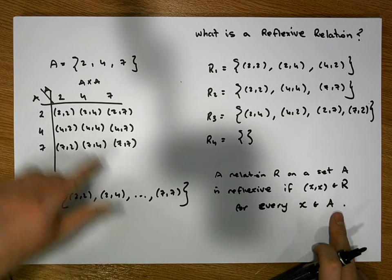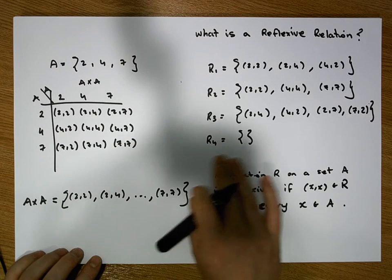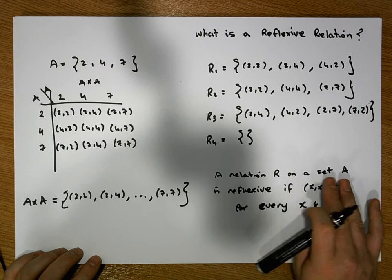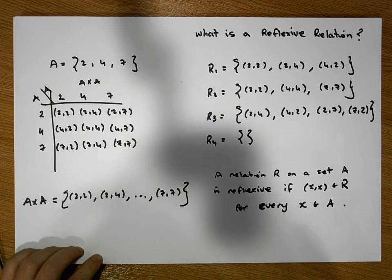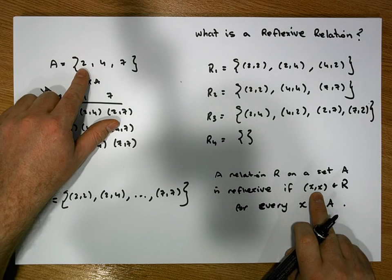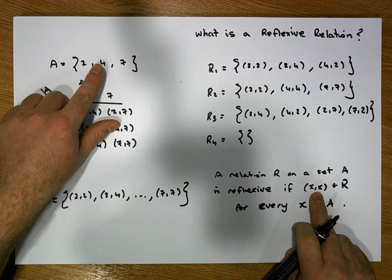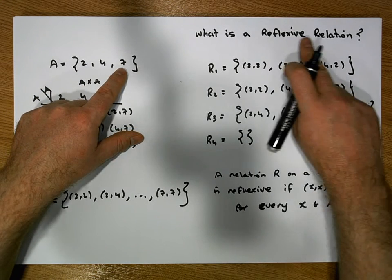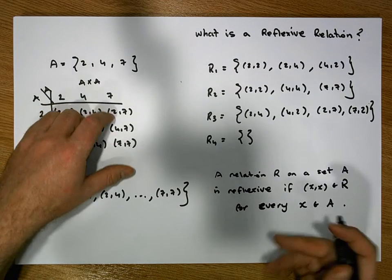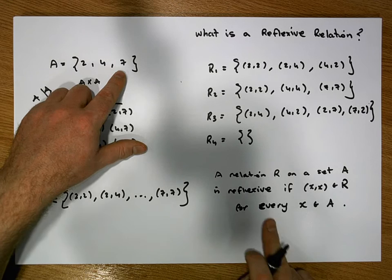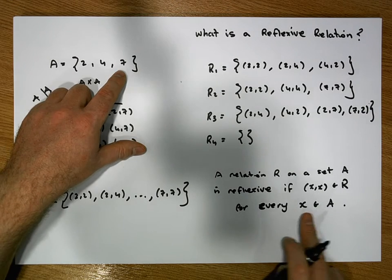This is the only definition where we go back to the base set that the relation has been constructed on. For every element we construct the ordered pair (x, x), so in this situation we construct (2,2), (4,4), and (7,7). If the relation is reflexive, we would expect to find (2,2), (4,4), and (7,7) in the relation, and it has to be true for every x.